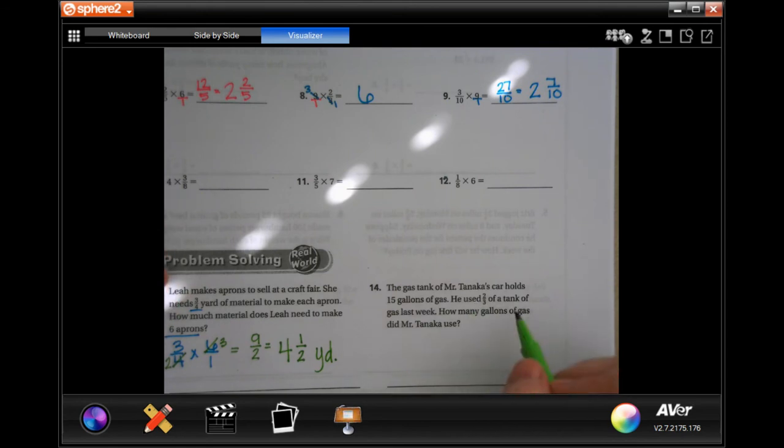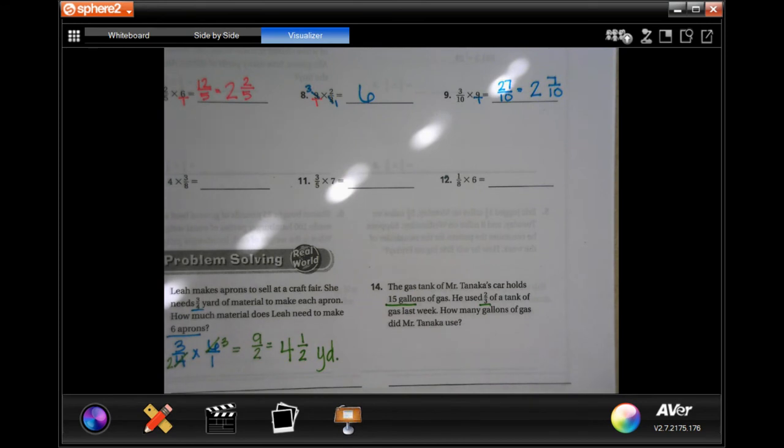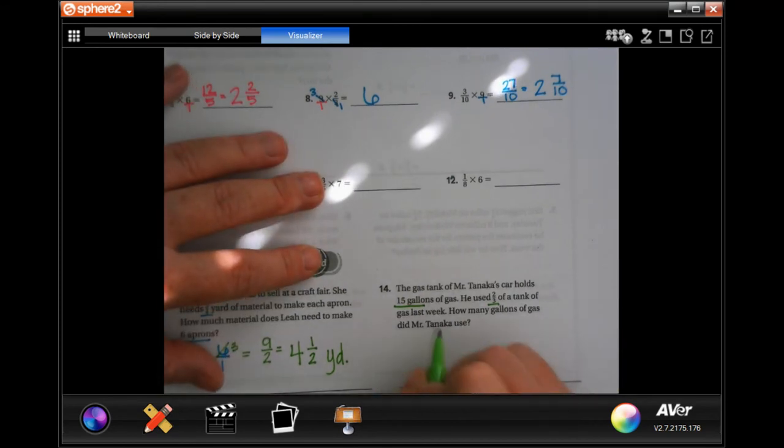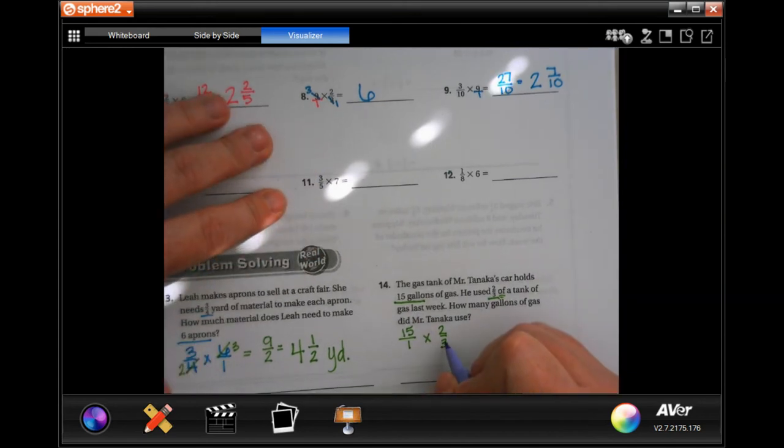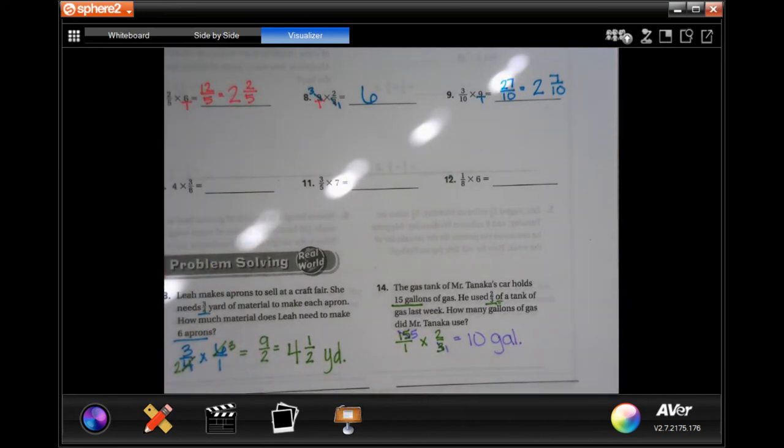The gas tank on Mr. Tanaka's car holds 15 gallons of gas. He used two-thirds of the tank last week. How many gallons of gas did he use? So, he had 15 gallons, which I'm going to put over a 1, and he used two-thirds of it. Of means multiply, remember? So now, there's another one of those where 3 goes into 3 once, 3 goes into 15, five times, and five times 2 is 10. One times 1 is 1, so 10 gallons. Make sure you're showing your work, guys.